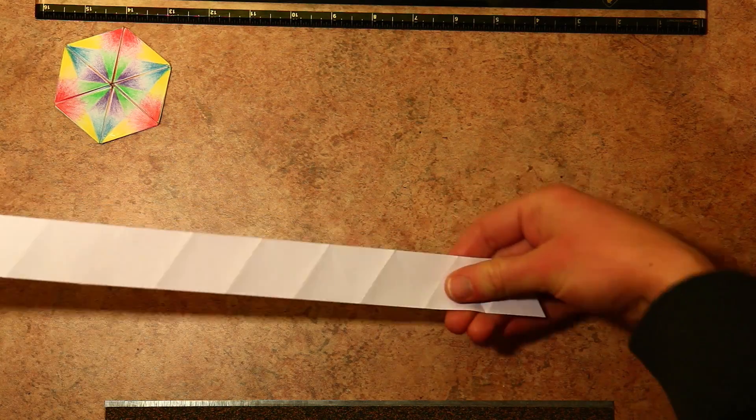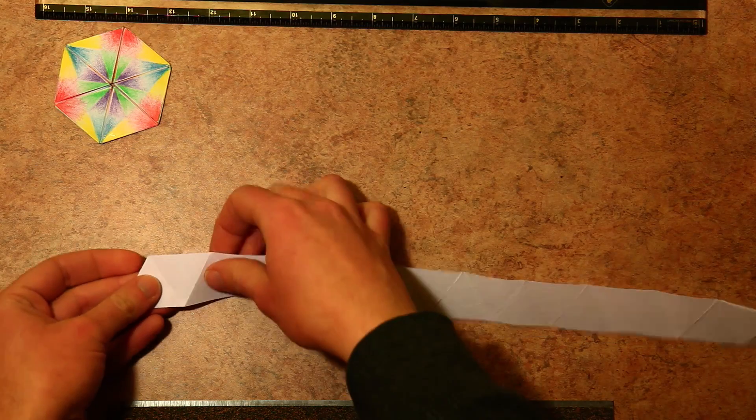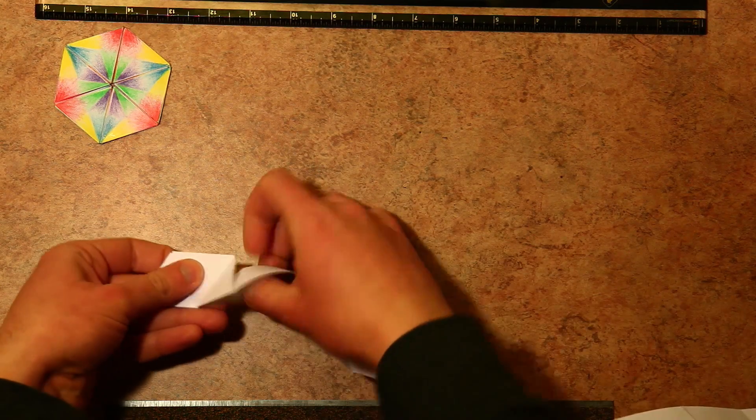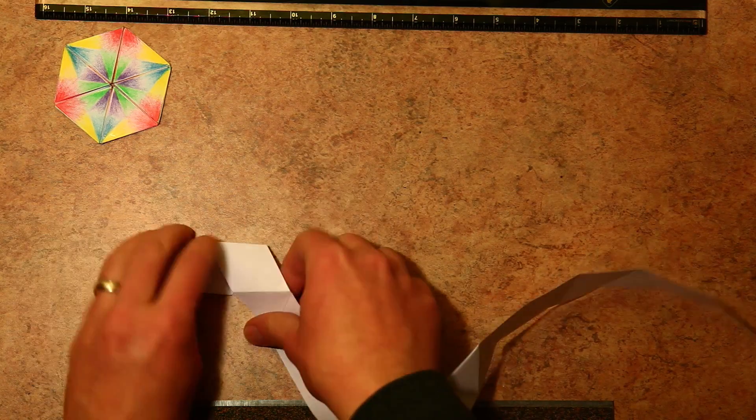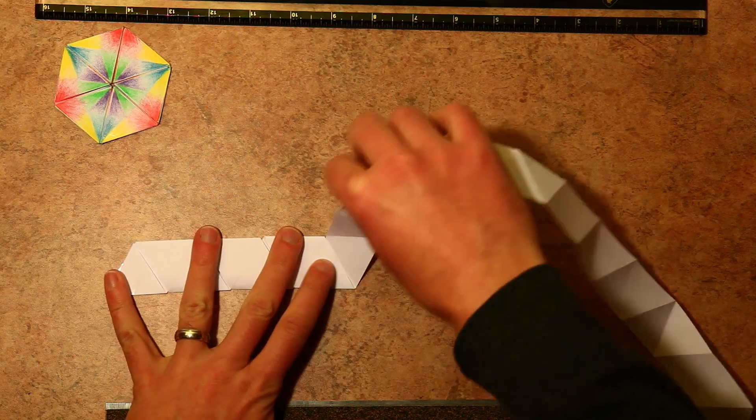We do the same thing as before. We fold the strip into, we double it up in a kind of spiral pattern. Now take a note of which direction you're using the spiral. In this case I was kind of going counterclockwise if that makes sense, under the bottom and over the top.